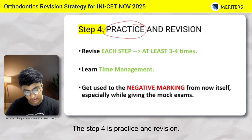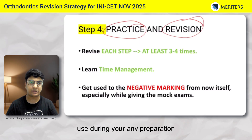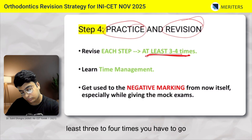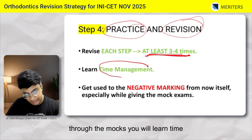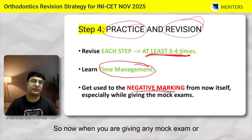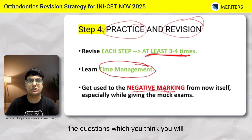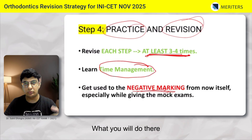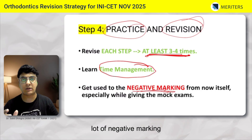Step four is practice and revision — the two most important attributes in any preparation, whether INICET or NEET. For INICET specifically, you have to go through the tasks in the INICET Power Pack and the Q-Bank at least three to four times. Through mocks you will learn time management, and the idea is to get used to negative marking from now itself. When solving any orthodontics task or mock exam, leave the questions you would leave in the actual exam hall. If you attempt all questions in practice, there is a high chance of a lot of negative marking in the final exam.